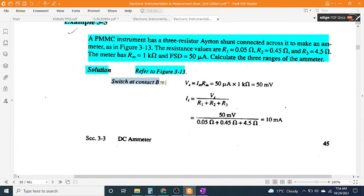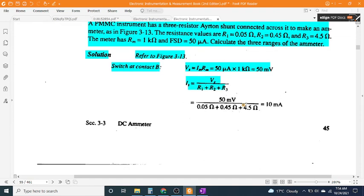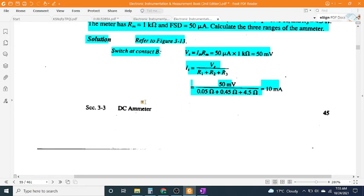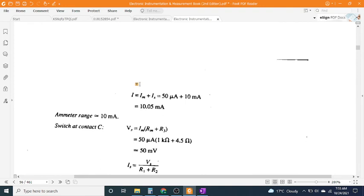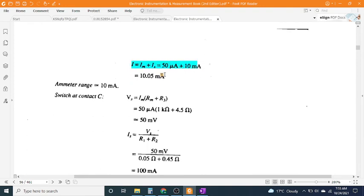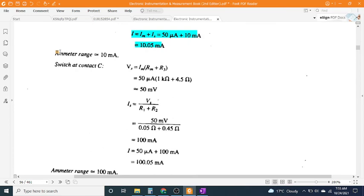Solution, refer to Figure 3-13. Switch at contact B: V_M = I_M × R_M = 50 μA × 1 kΩ = 50 mV. I_S = V_M / (R_1 + R_2 + R_3) = 50 mV / (0.05Ω + 0.45Ω + 4.5Ω) = 10 mA. Total current I = I_M + I_S = 50 μA + 10 mA = 10.05 mA. Ammeter range = 10 mA.